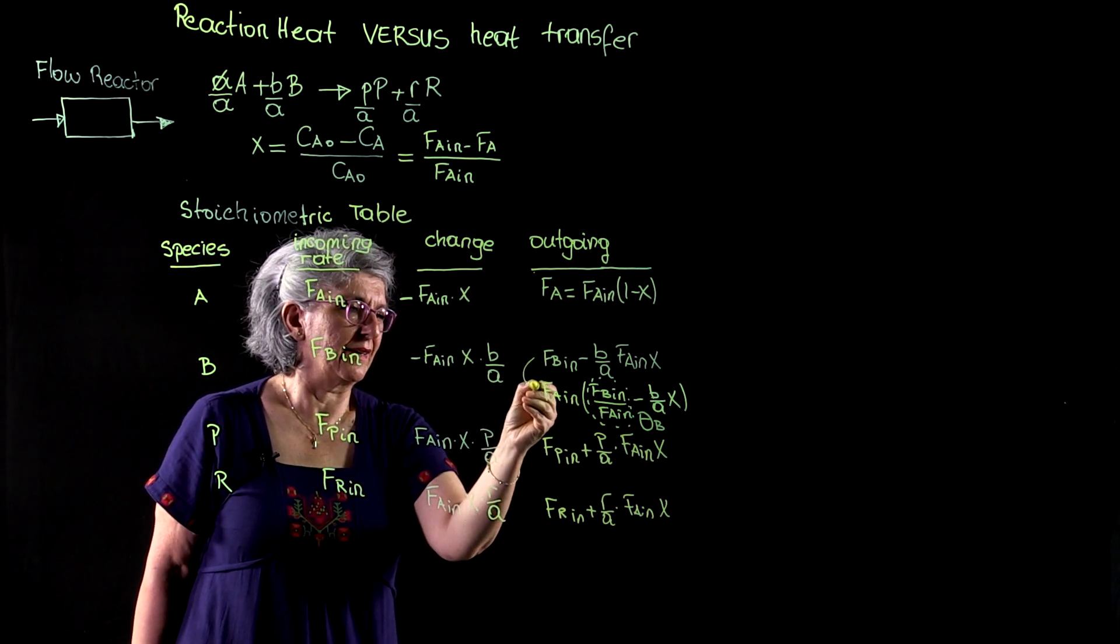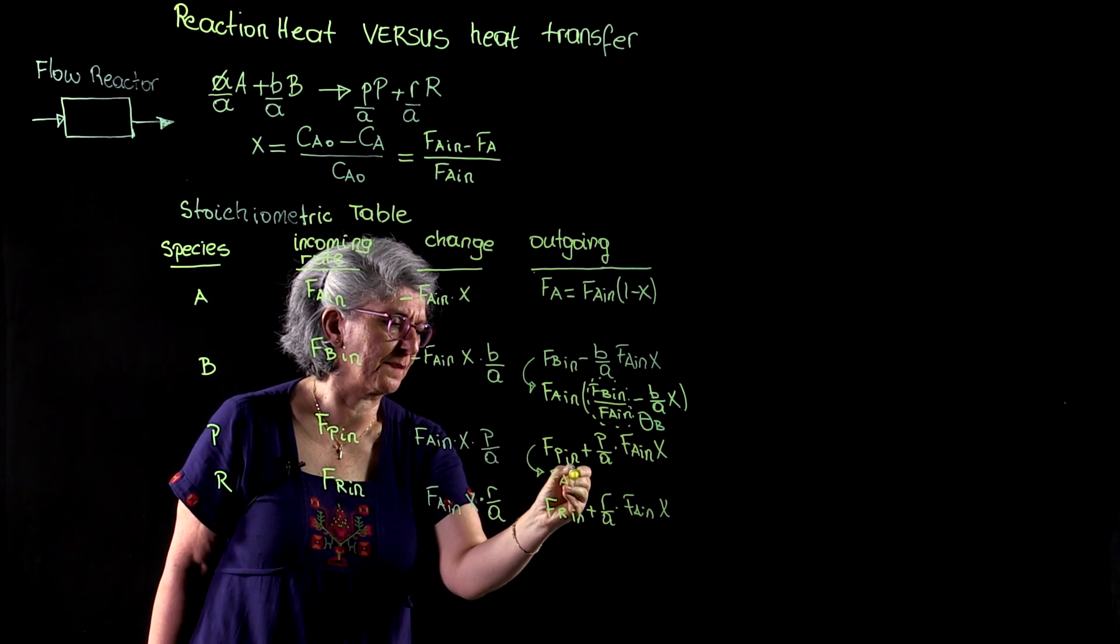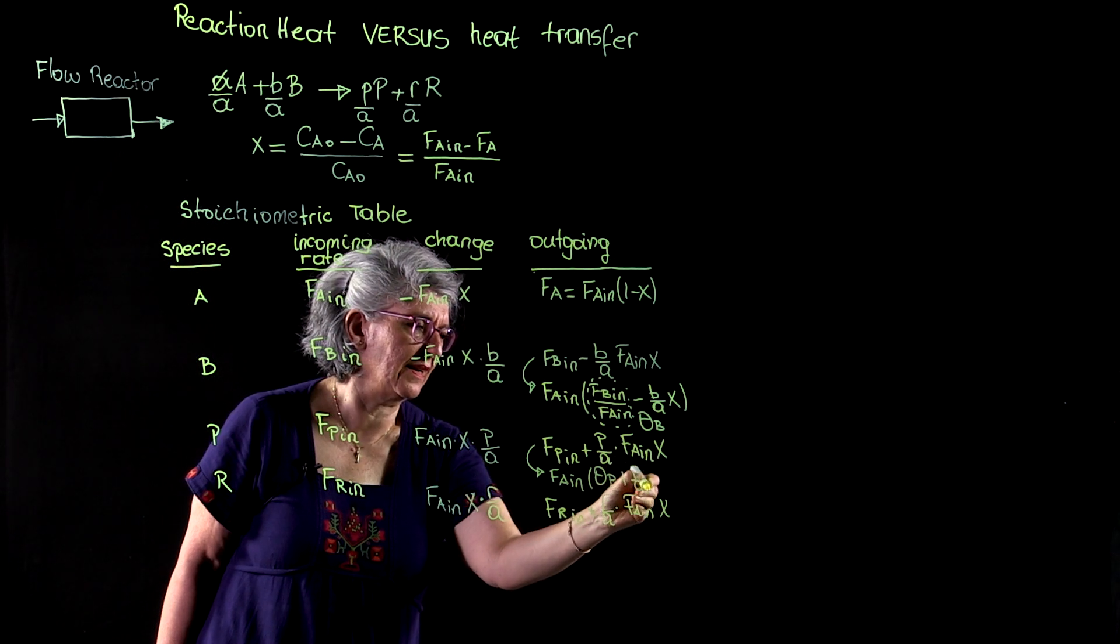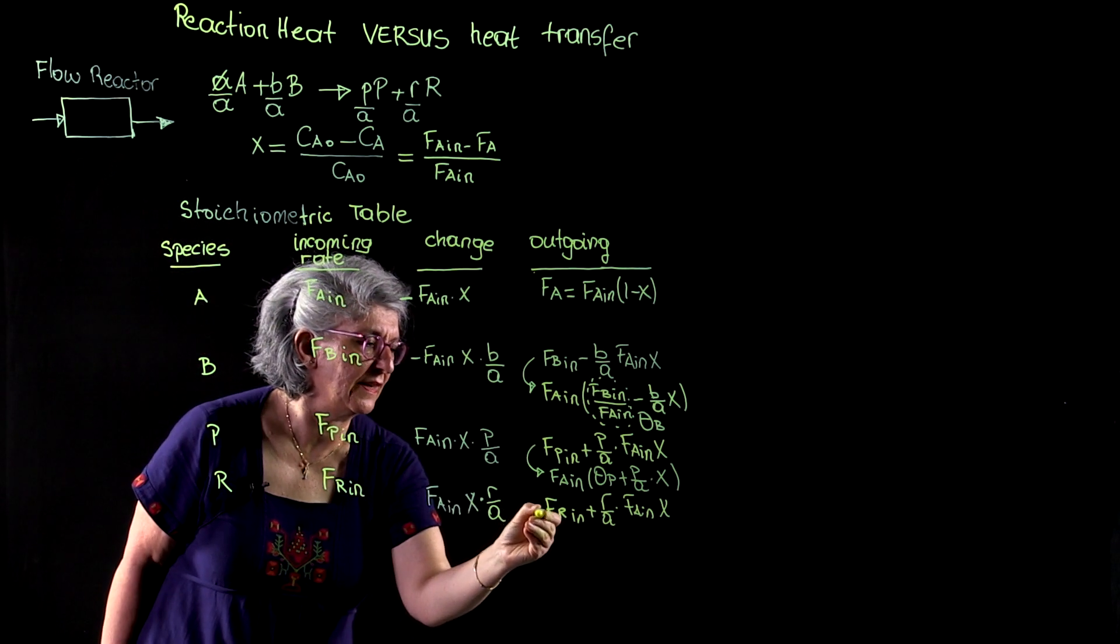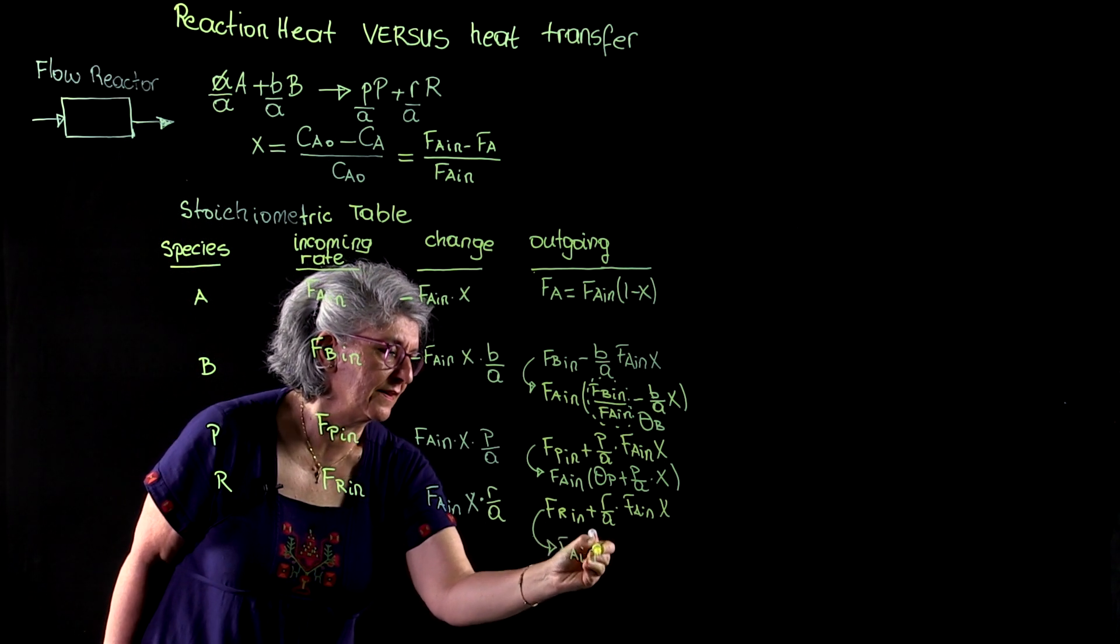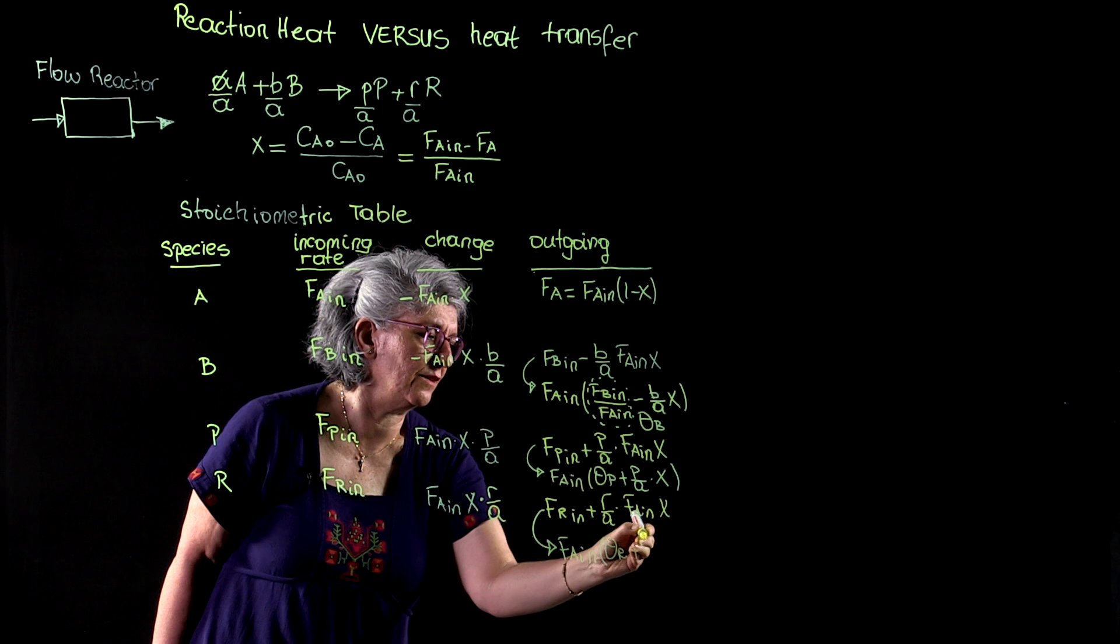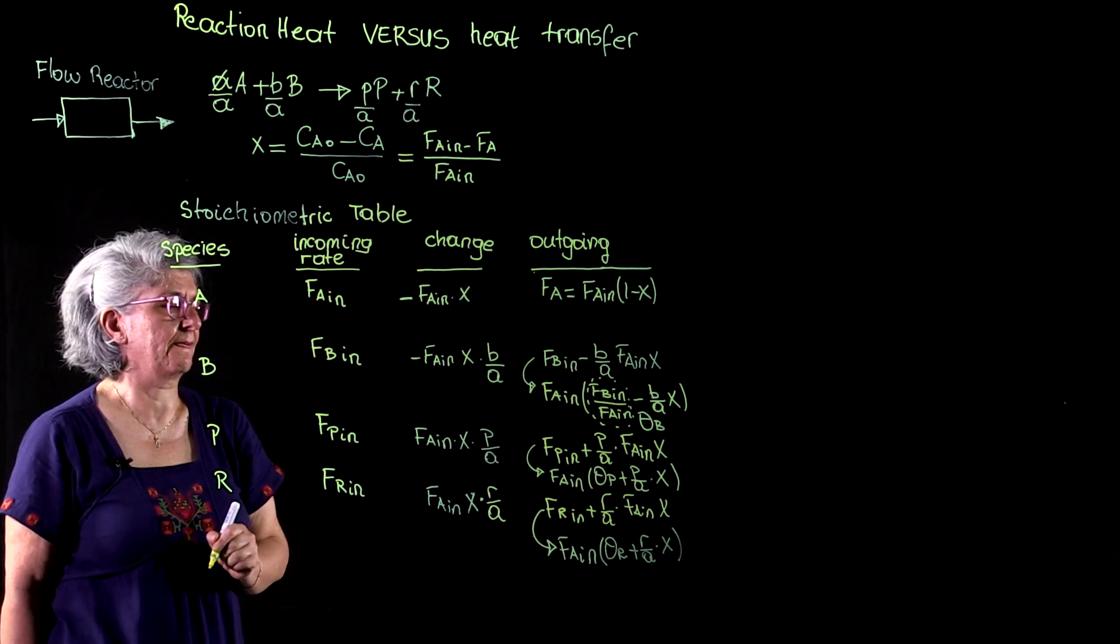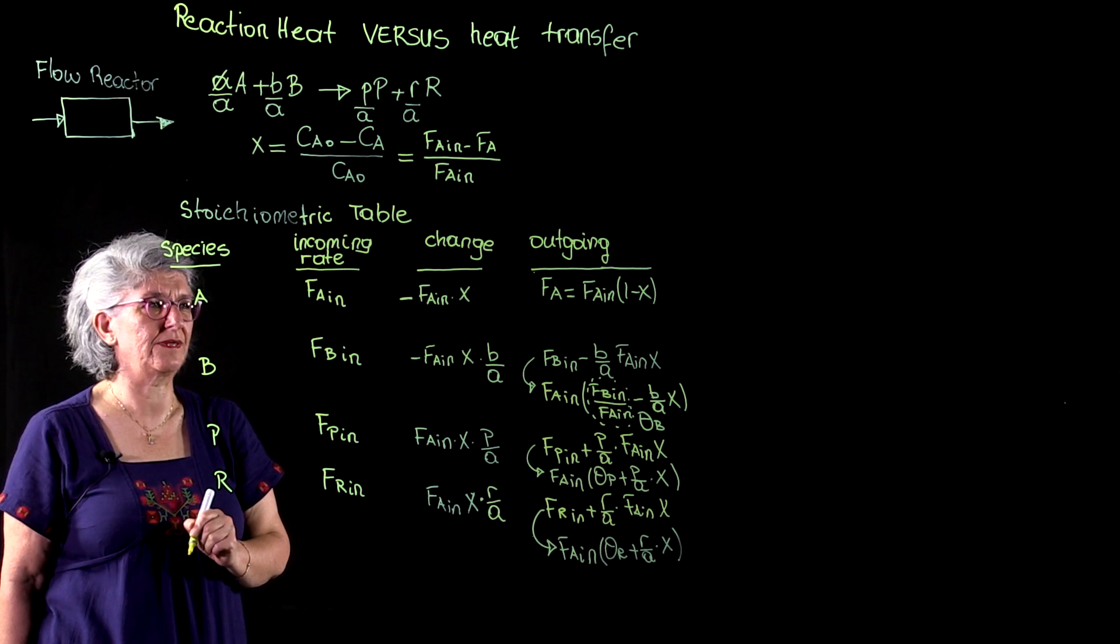And when I do the same for the others, I will have FA in times theta P plus P over A times X, and we have FA in times theta R plus R over A times X. This is our stoichiometric table.